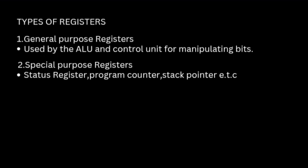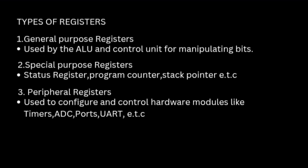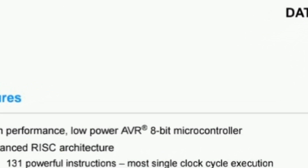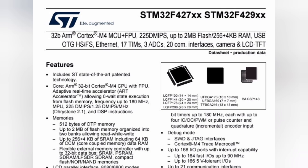Special-purpose registers control specific functions of the microcontroller, like the status register, program counter, or stack pointer. Peripheral registers are used to configure and control hardware modules, like timers, ADCs, and UART. The amount of data a register can hold depends on the word size, or bit width, of the microcontroller's CPU.